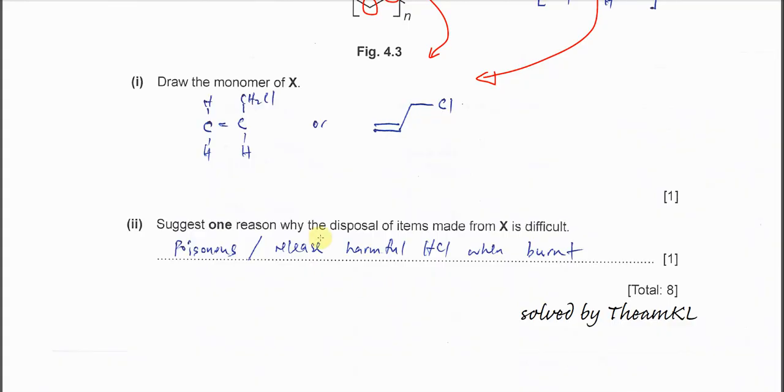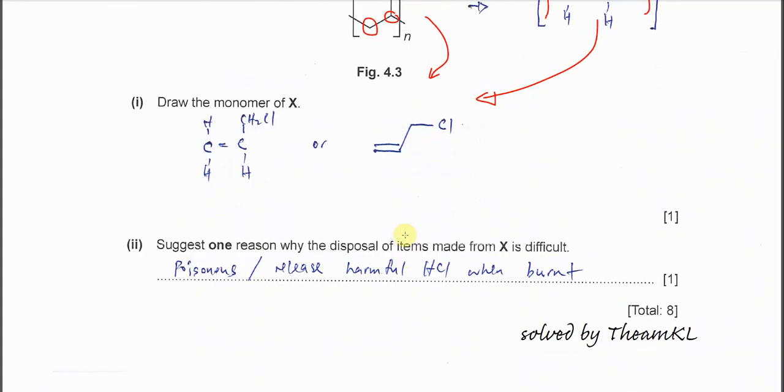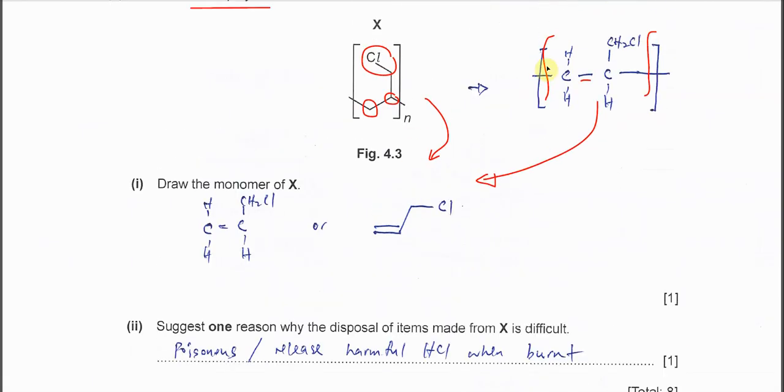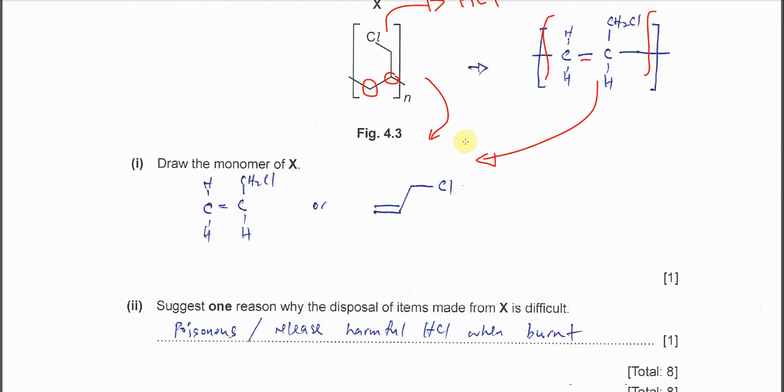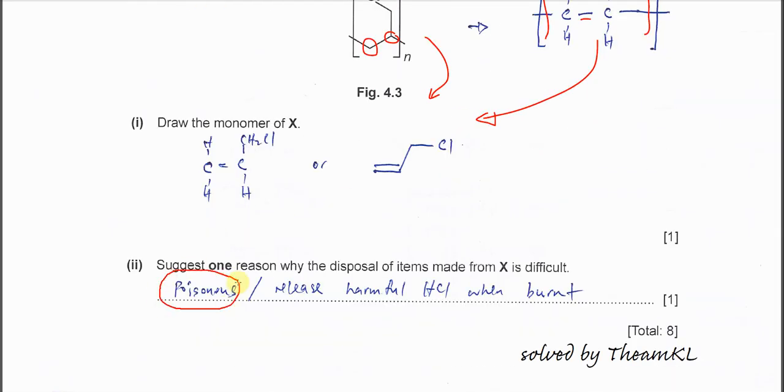Suggest one reason why disposal of items made from X is difficult. Inside the polymer, you can see there is chlorine here. When we burn this polymer, it will mostly form a gas we call HCl. The HCl is actually not really good—it's poisonous because it releases harmful HCl when burned. That's all for this question. Thank you.